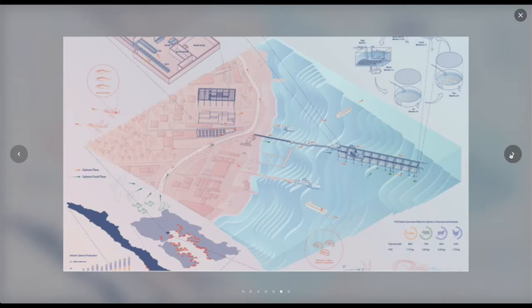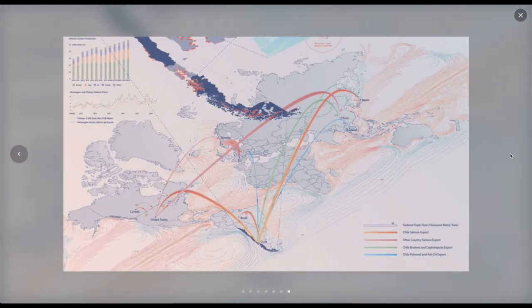The green arrows showing the food flow that will be feed for salmon. Most salmon facilities are located in the south part of Chile. Chile is the second biggest salmon exporting country with their salmon mainly exported to United States, Japan and Brazil.